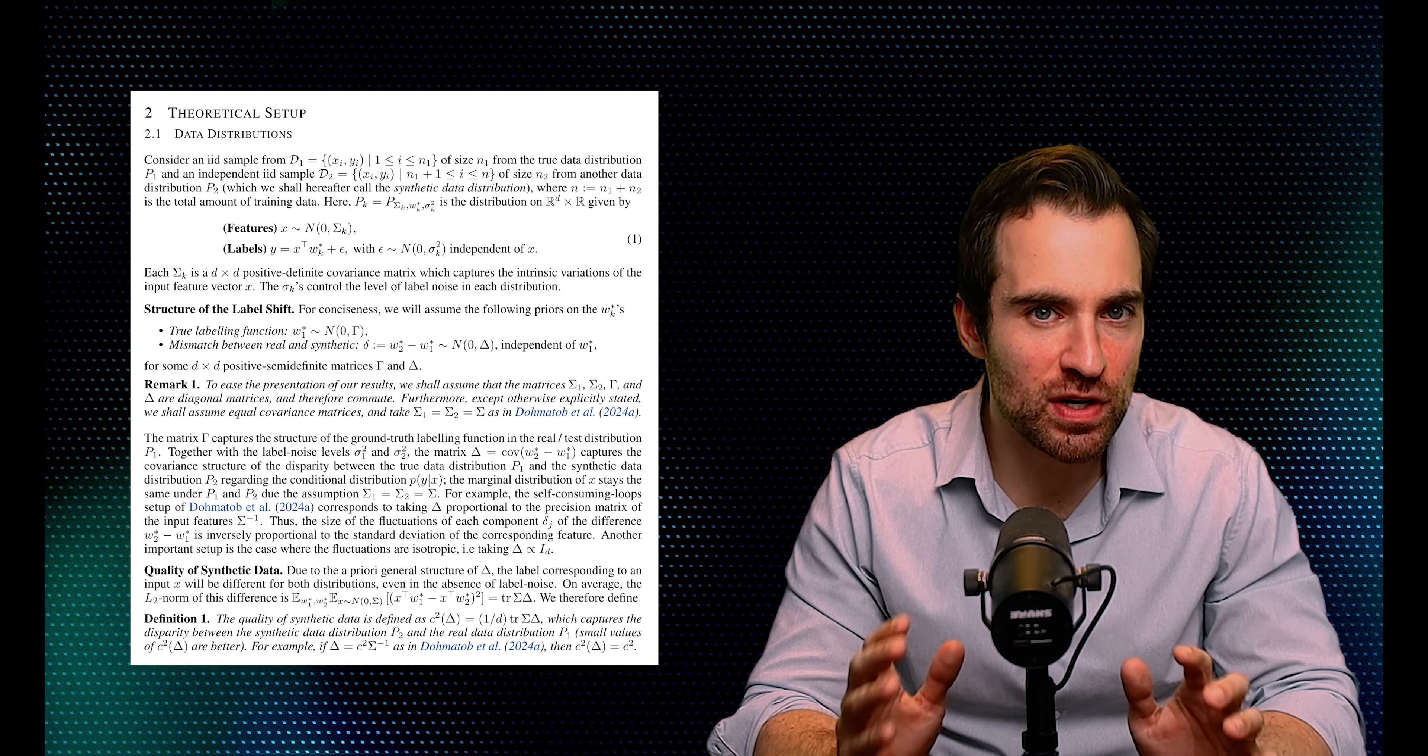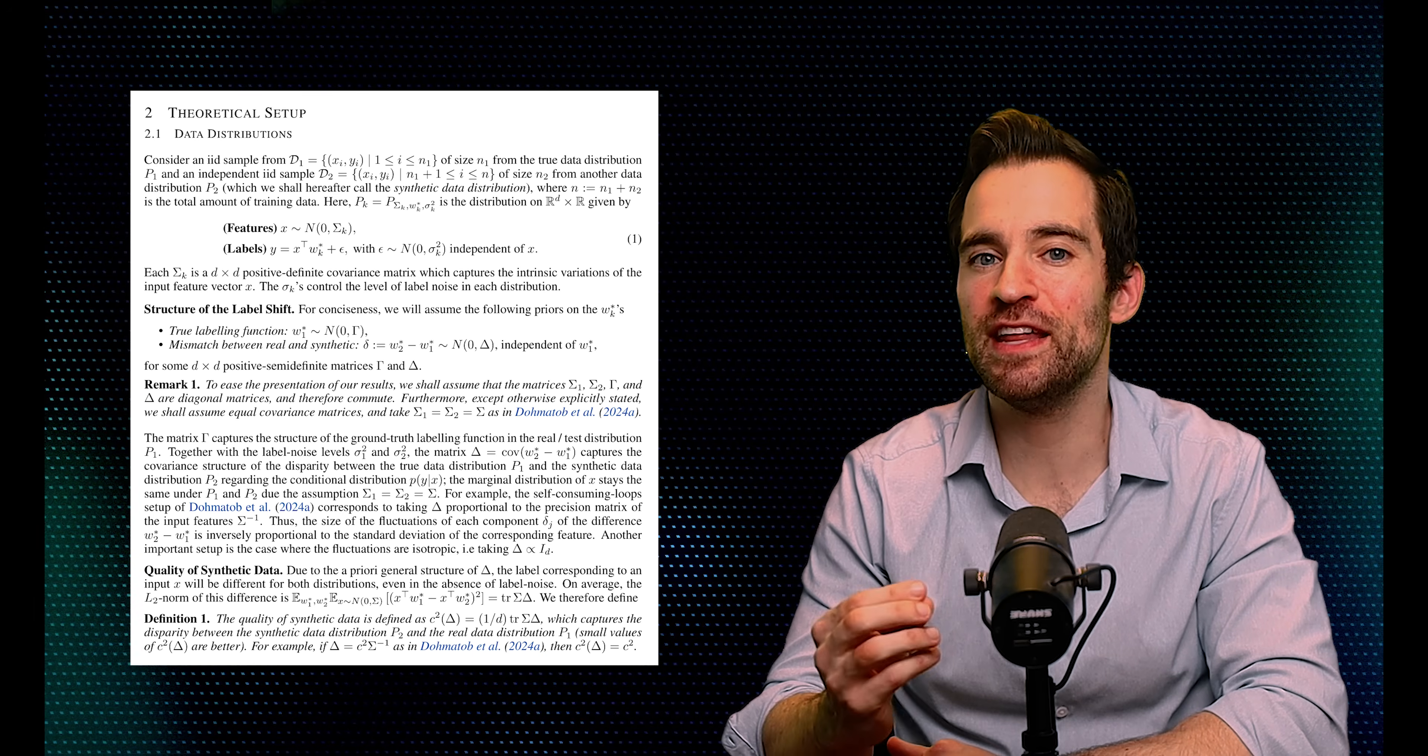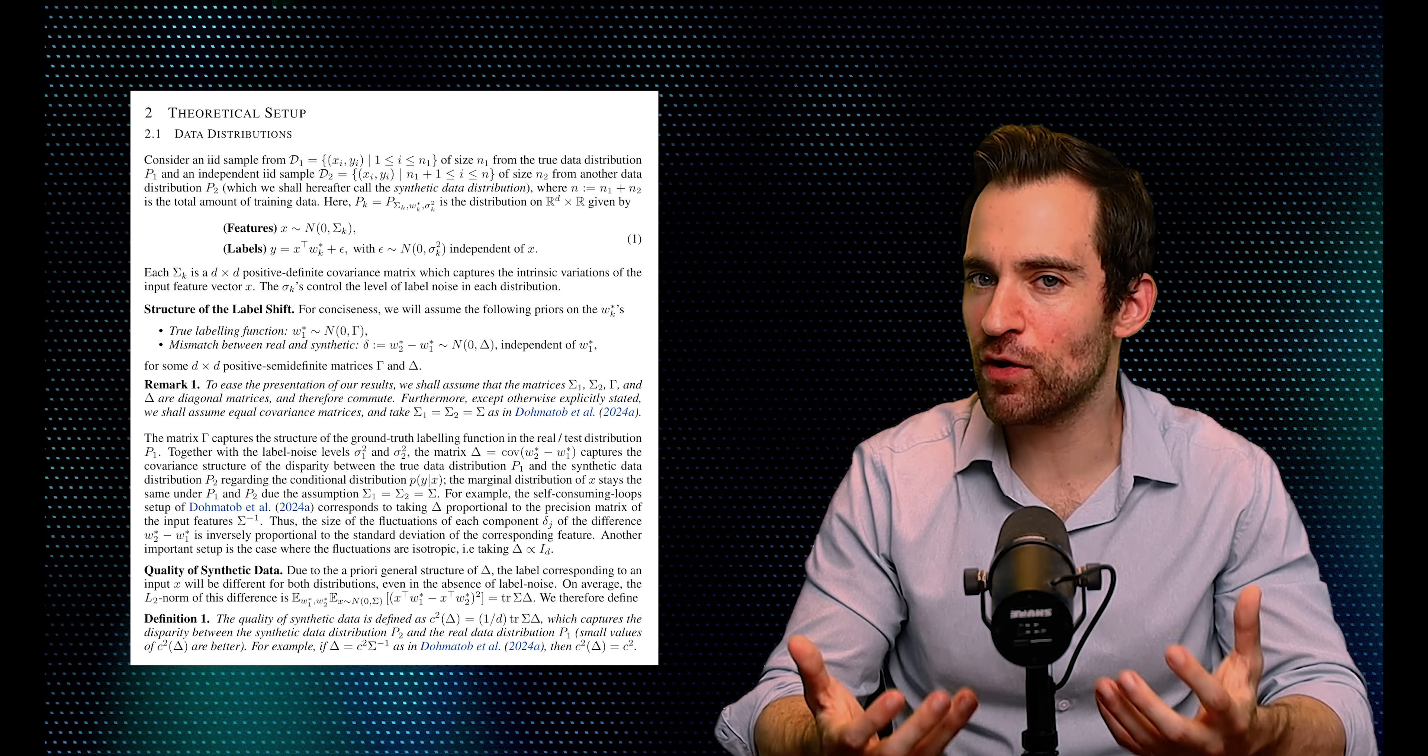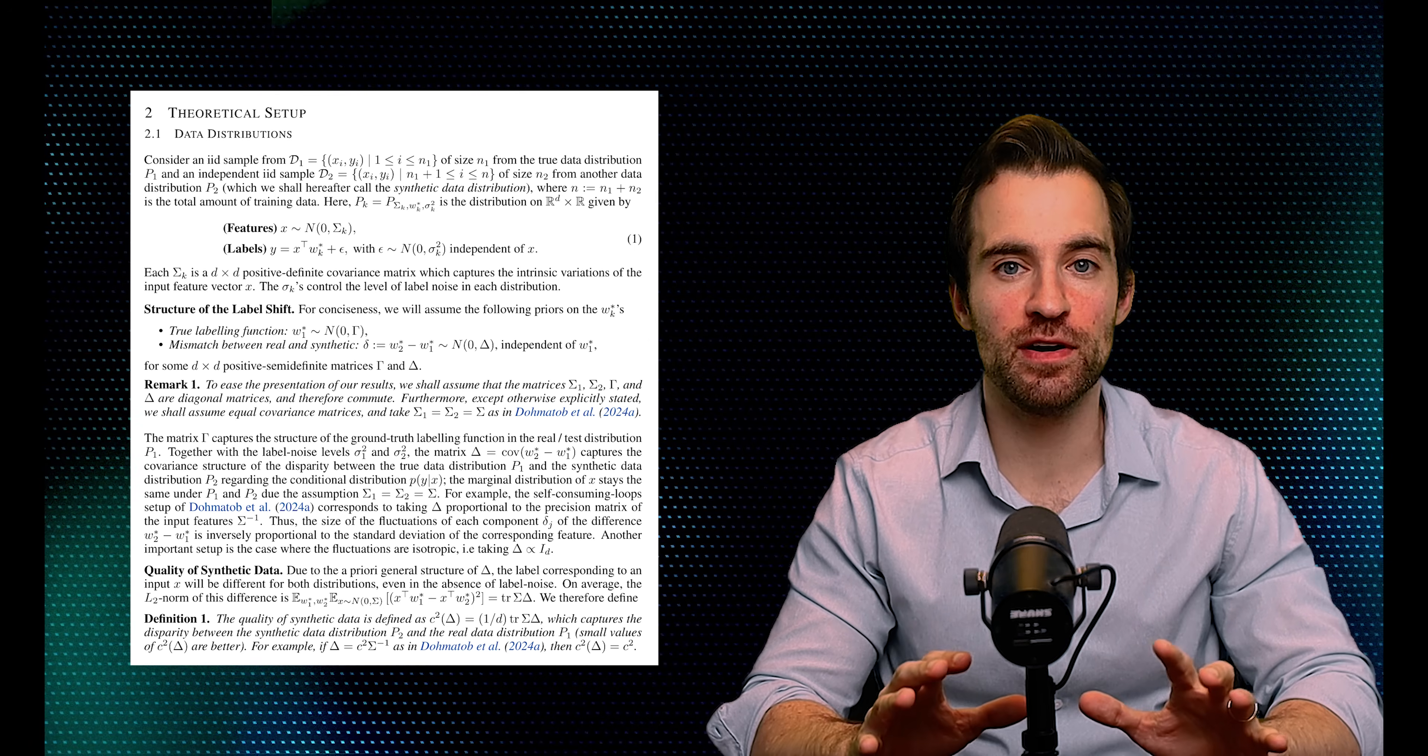Now, if the model is really good, the synthetic data will be generated by the same distribution that generated the real data. This would be like having a very good model. If the model isn't so good, the distributions are different, and this disparity is controllable via a value they call c squared.